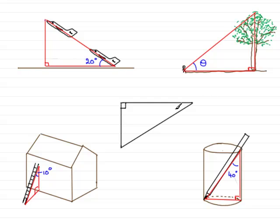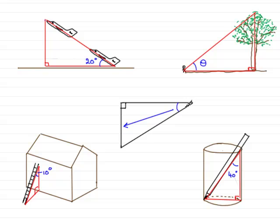So before we can start to use trigonometry, what we need to do is name the three sides of a right angle triangle. One of the sides is always governed by the angle that we have in the triangle, whether it be theta or whether it be a numerical angle — 20, 10, or 40 degrees or whatever. So suppose we had a triangle like this, and this was the angle we were referring to. The side opposite this angle is always called the opposite side — that's this side here.